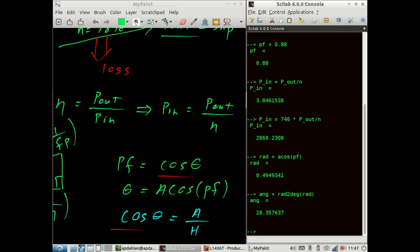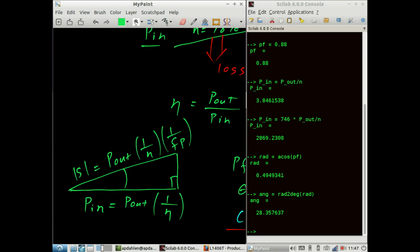And now we can figure out the magnitude of S. Let's write some of these numbers down before I forget. So power in is 2870 watts. The angle is 28.4 degrees. And now we're looking to calculate the magnitude of S. S magnitude is equal to power in times 1 over power factor.